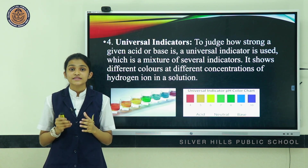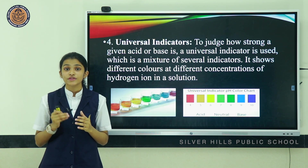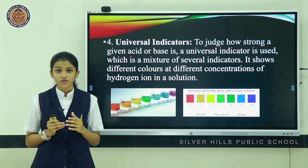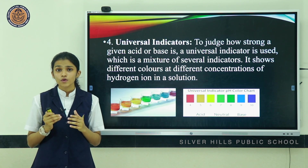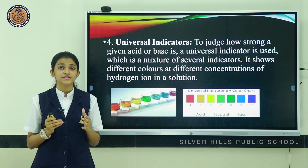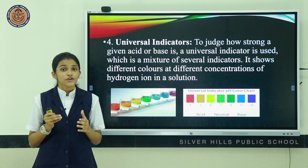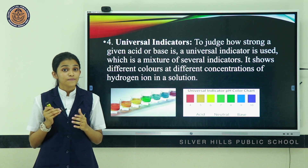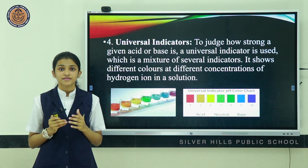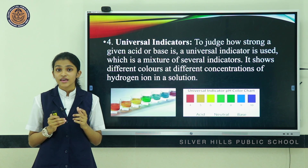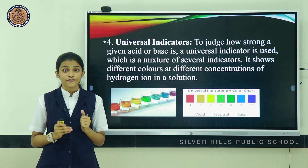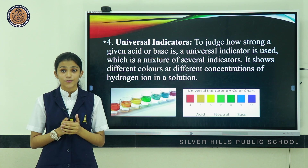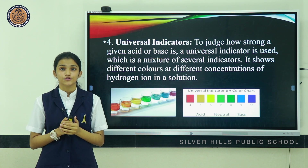Universal indicators constitute the fourth classification of indicators. To judge how strong an acid or base is, a universal indicator is used. It is a mixture of several indicators and shows different colors at different concentrations of hydrogen ions present in a solution.